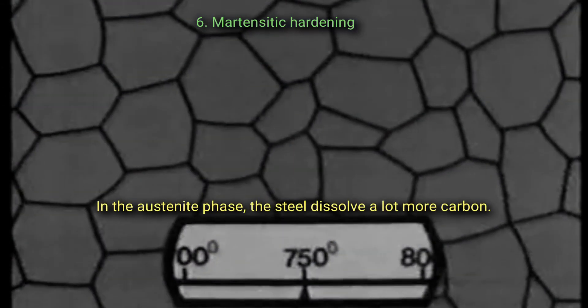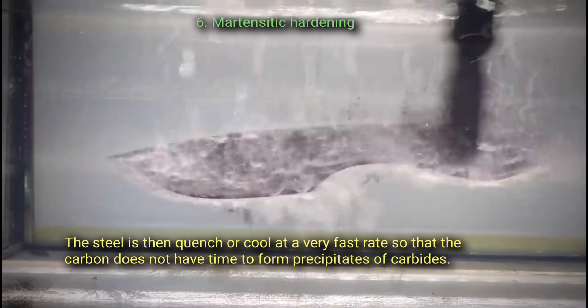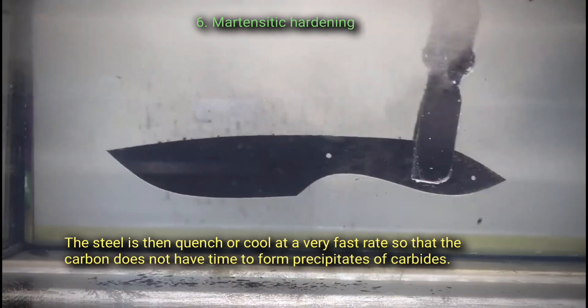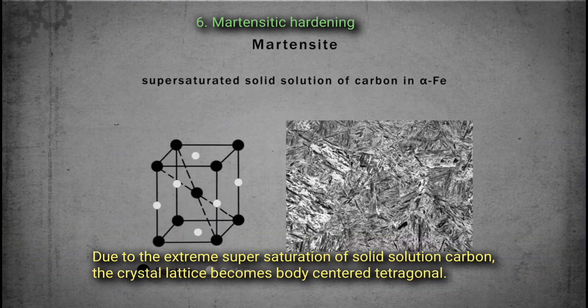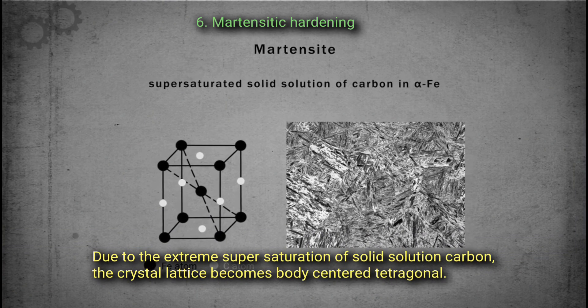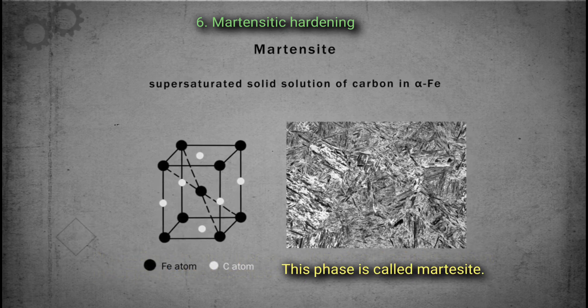In the austenite phase, the steel dissolves a lot more carbon. The steel is then quenched or cooled at a very fast rate so that the carbon does not have time to form precipitates of carbides. Due to the extreme supersaturation of solid solution carbon, the crystal lattice becomes body-centered tetragonal. This phase is called martensite.